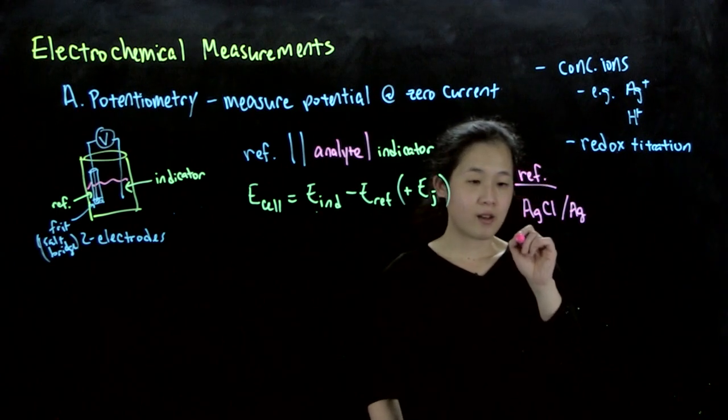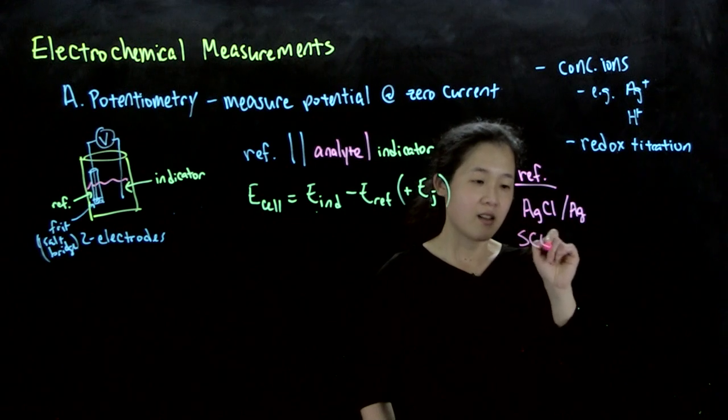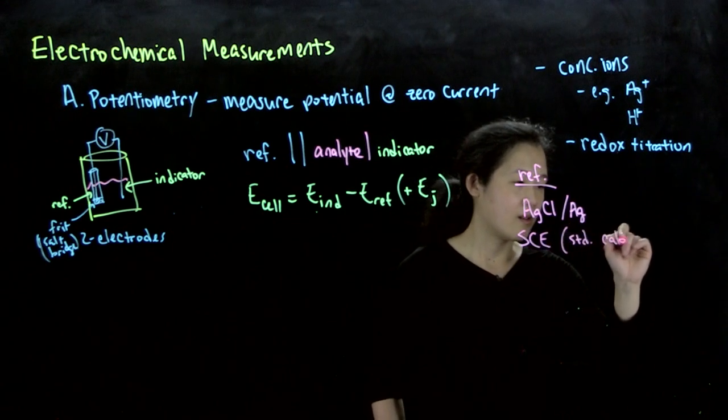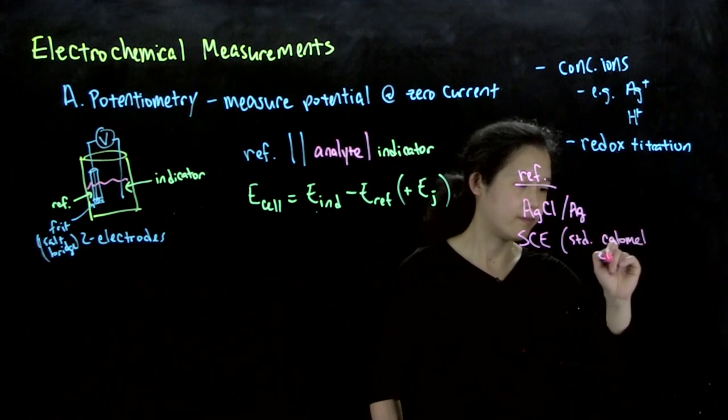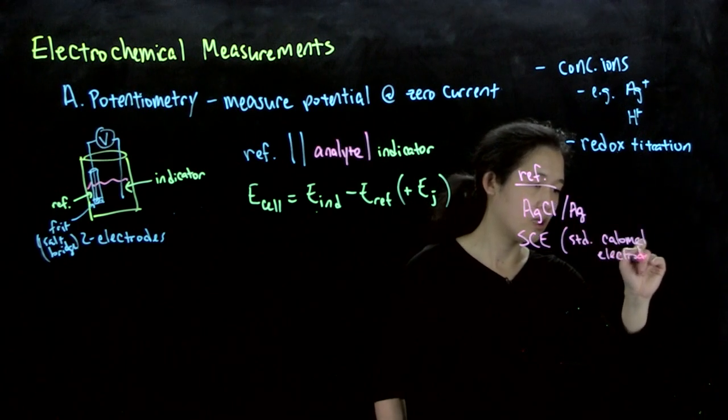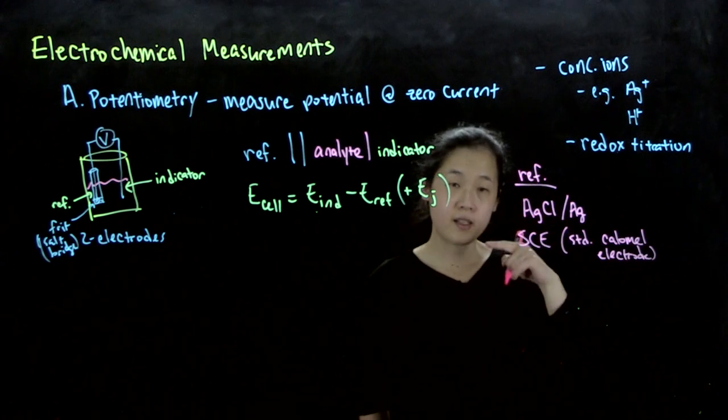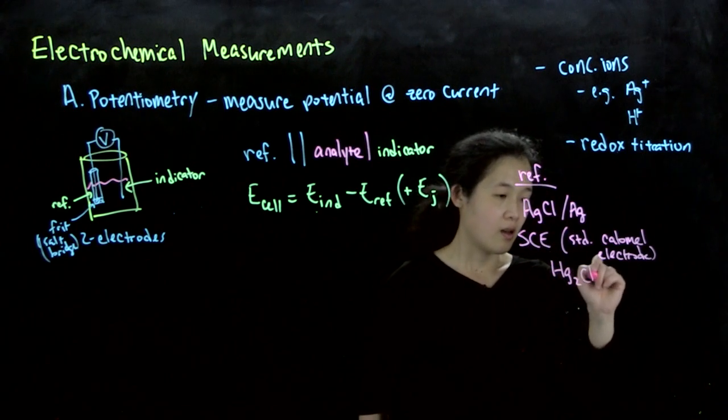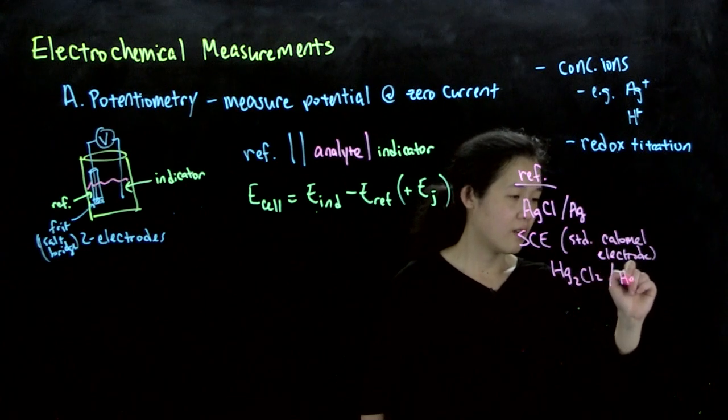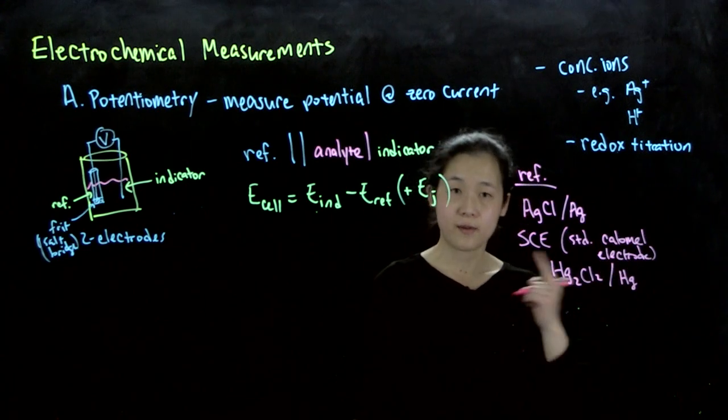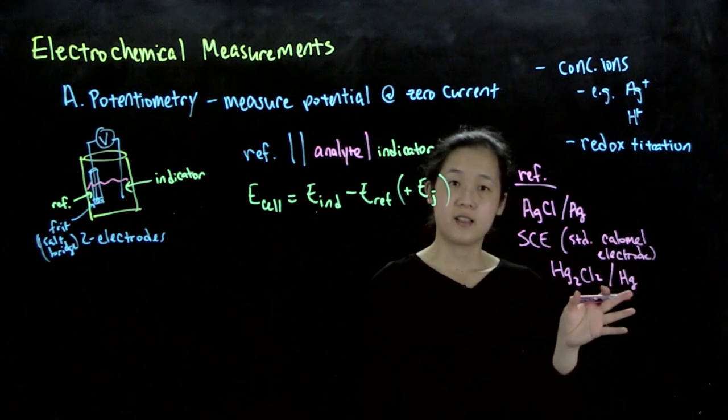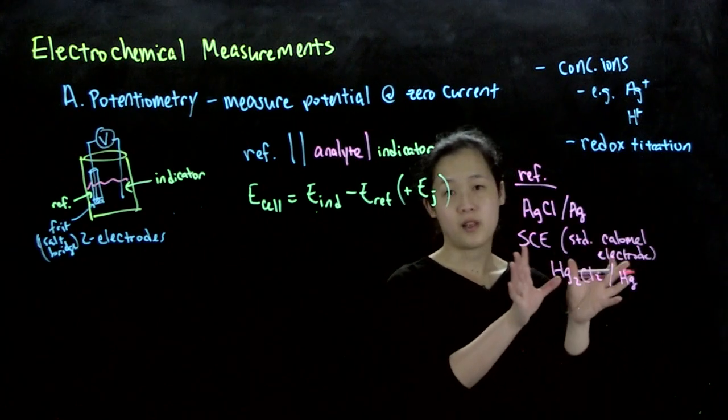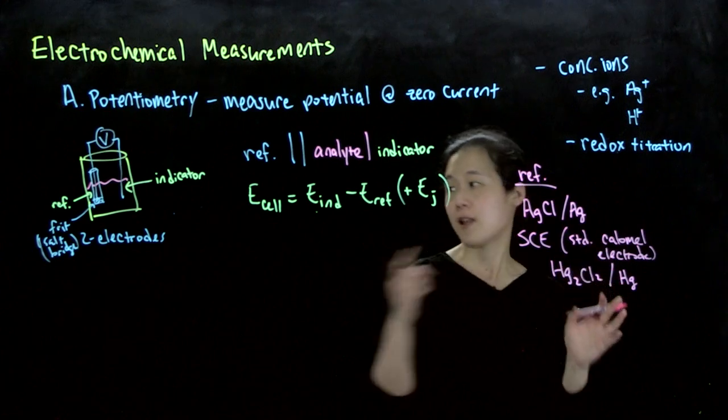Another common one is the so-called SCE. So this is the standard calomel electrode. And what it is, there'll be a metal wire in there. And what we're looking at here is mercury chloride and mercury zero, and that's the redox couple there. And so again, you have mercury, and then you have your chloride solution. And then this will be a really common reference electrode that you have on one side.